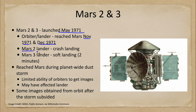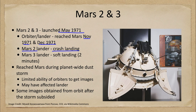The Mars 2 lander was unsuccessful and actually crash landed, and the exact reason as to why it crashed is not known. The Mars 3, on the other hand, did have a soft landing on Mars and lasted about two minutes.